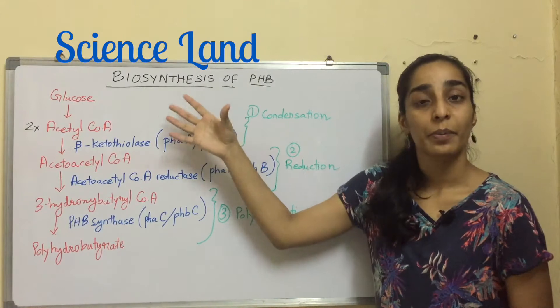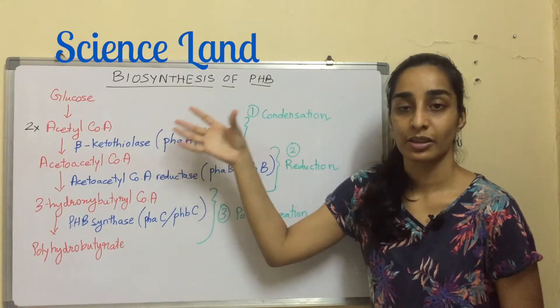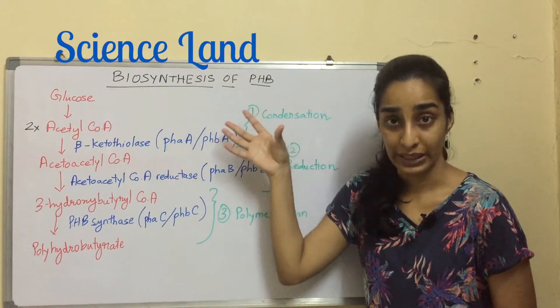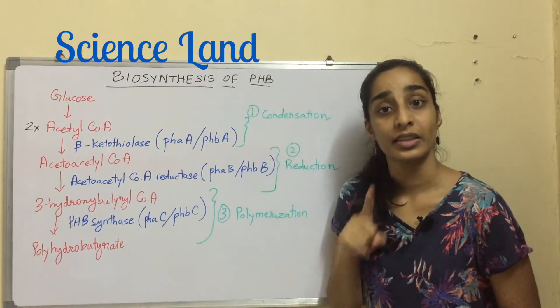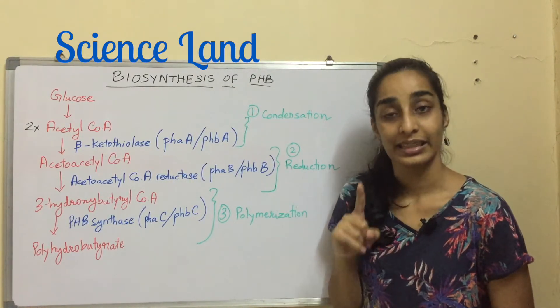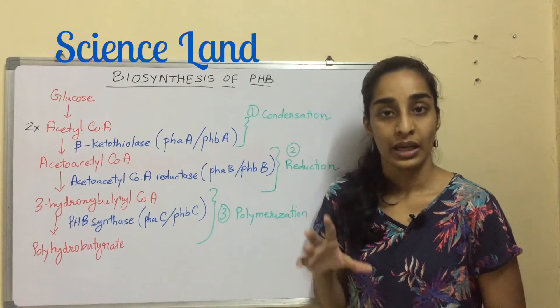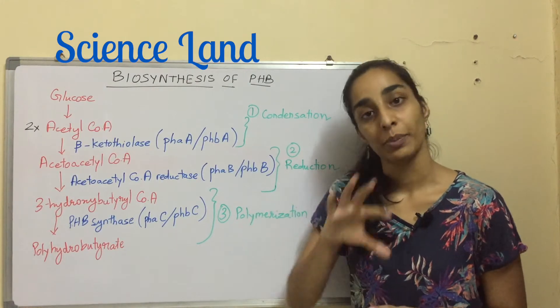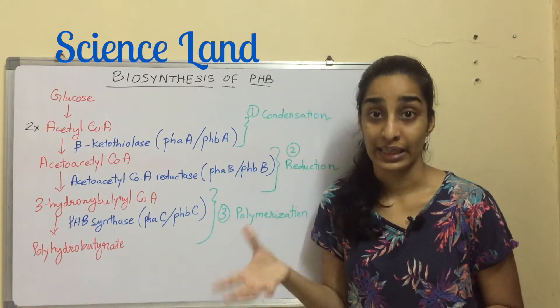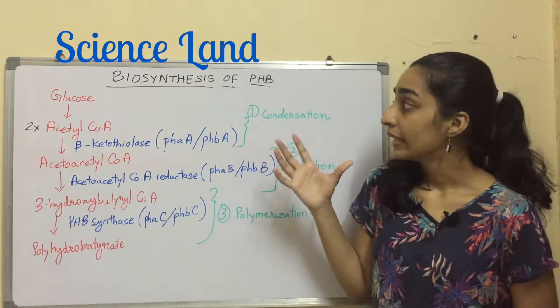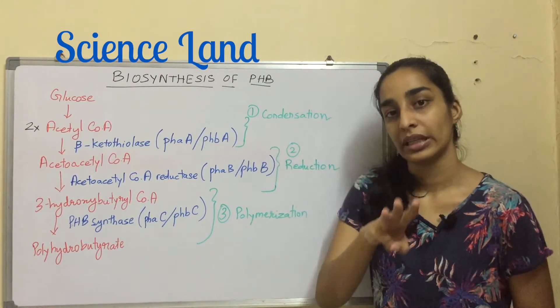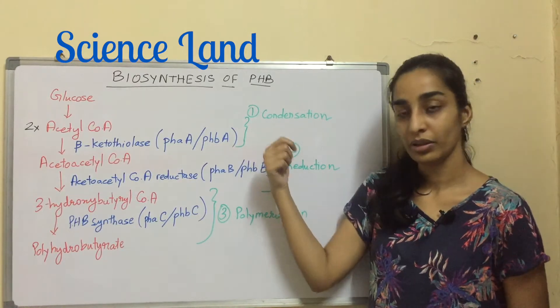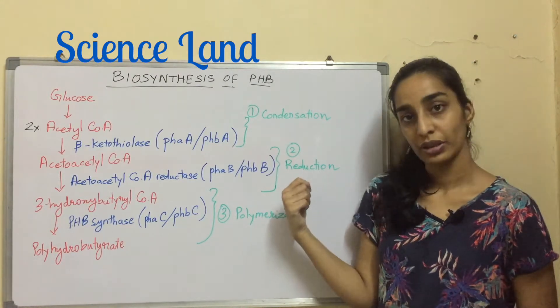The biosynthesis of PHB was the first characterized pathway of the polyhydroxyalkanoates. It has three steps: condensation, reduction, and polymerization.